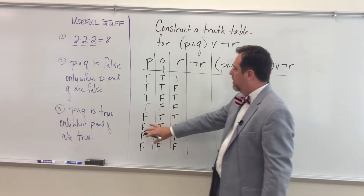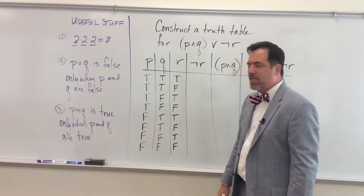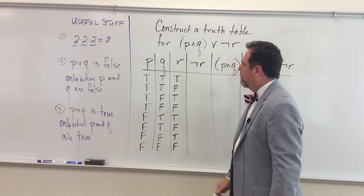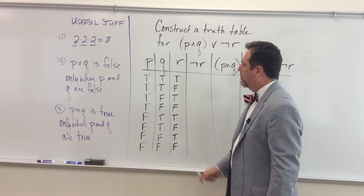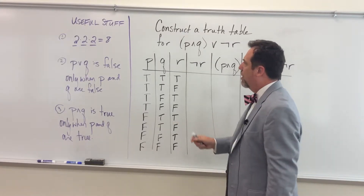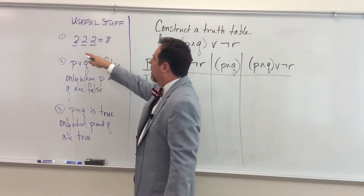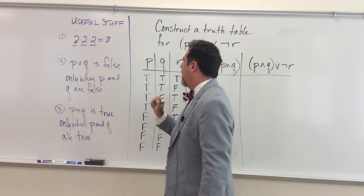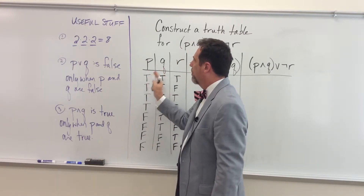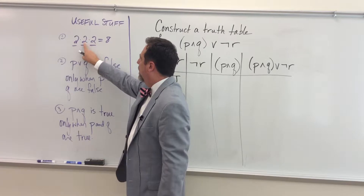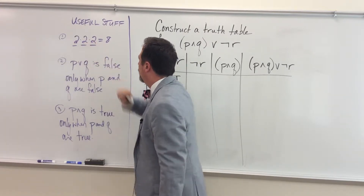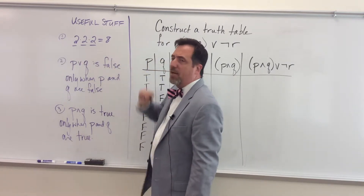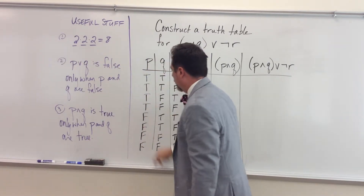A lot of students are confused about how I know I'm going to have eight rows. The answer is because I have three individual propositions that each have a possible truth value of either true or false. So I'll use the fundamental accounting principle: two possibilities for P, two for Q, two for R — multiply those together and I get eight.